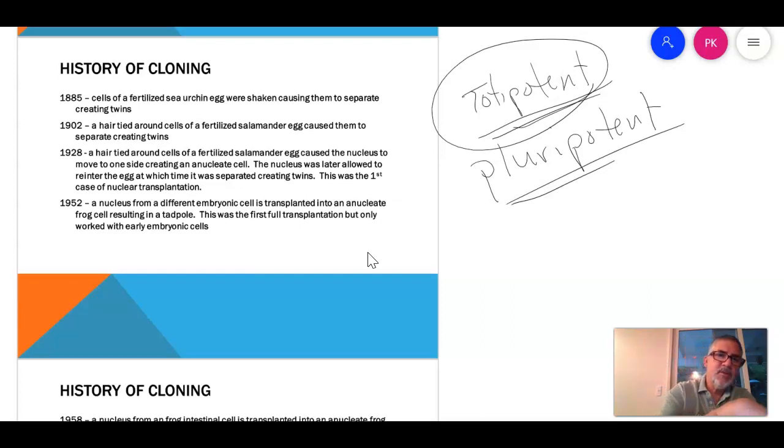So in 1902, they tied a hair around a fertilized mass of cells and separated a cell and showed that it grew into a twin. And that's a lot of what happens when we have maternal twins. The egg separates, or one of the cells separates as it's dividing, and it just becomes another one that looks like the other one, because the DNA is identical.